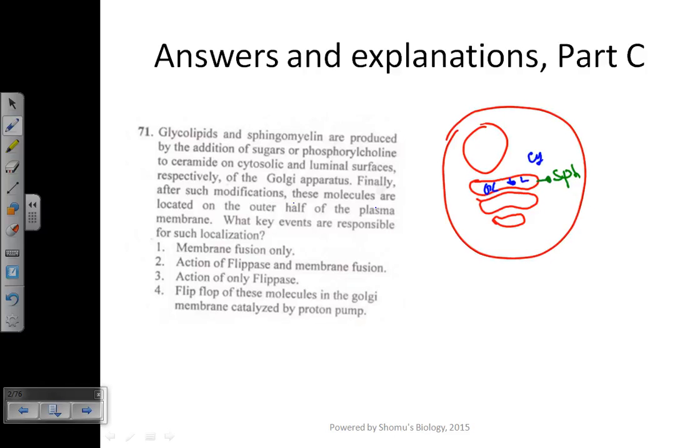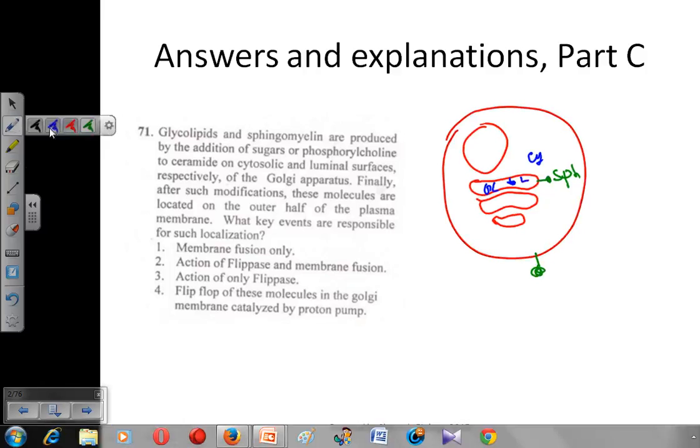They are telling us that finally after such modification, these molecules are located on the outer half of the plasma membrane. Both of the sphingomyelin as well as glycolipids will be present at the outer surface of the membrane.